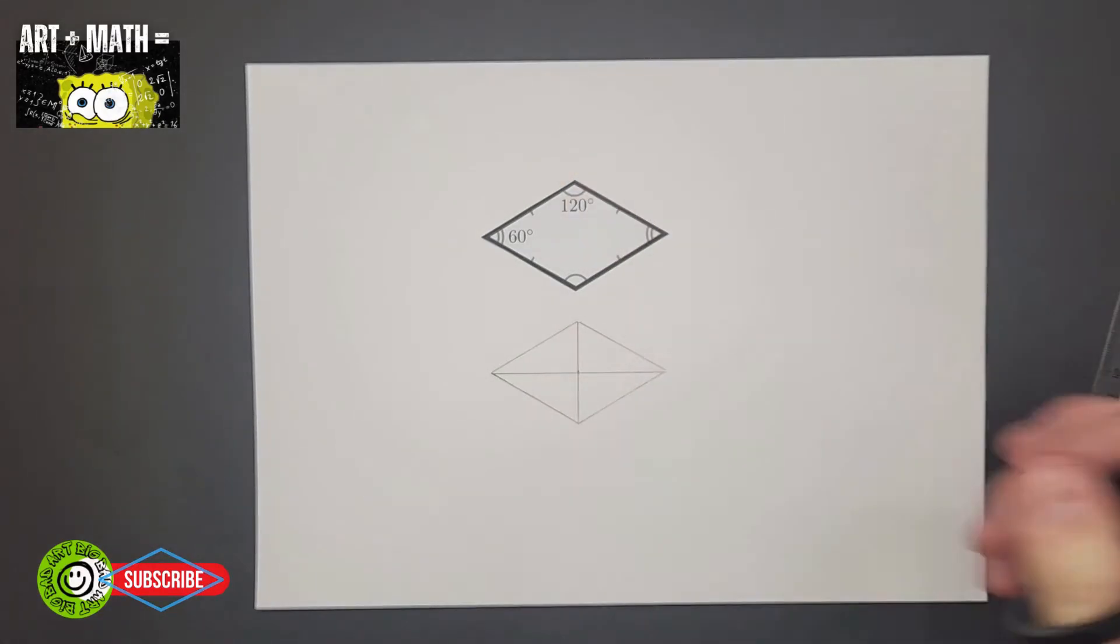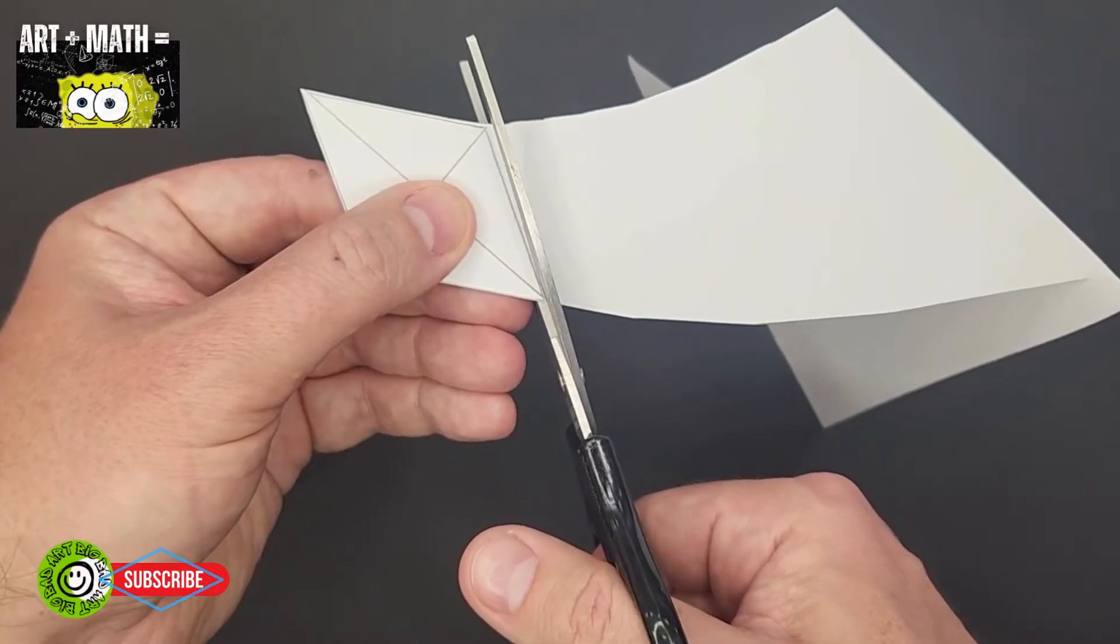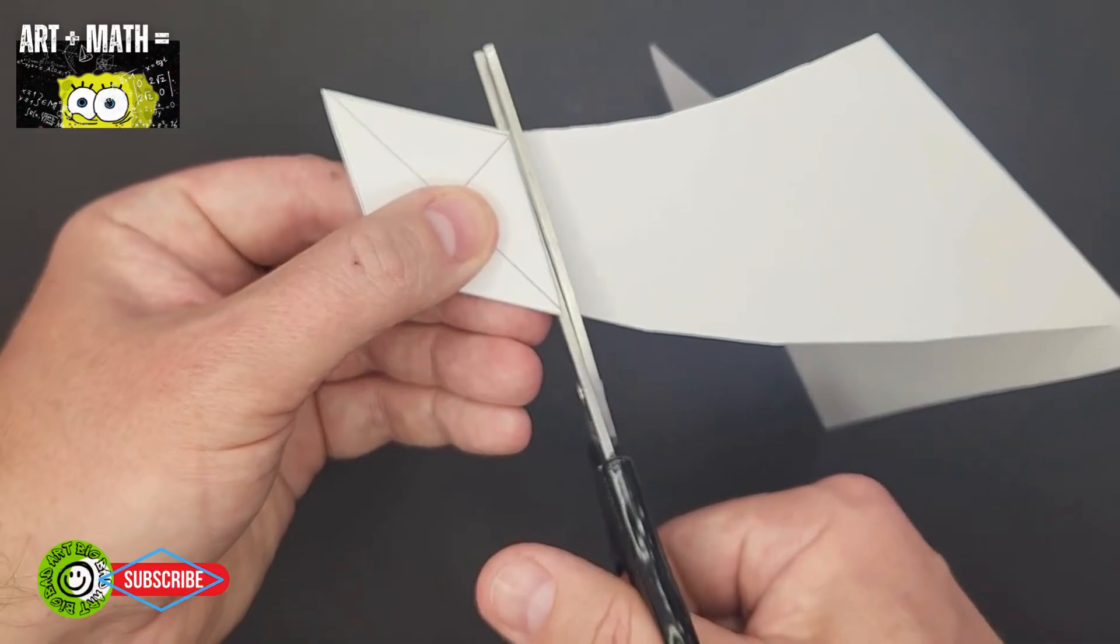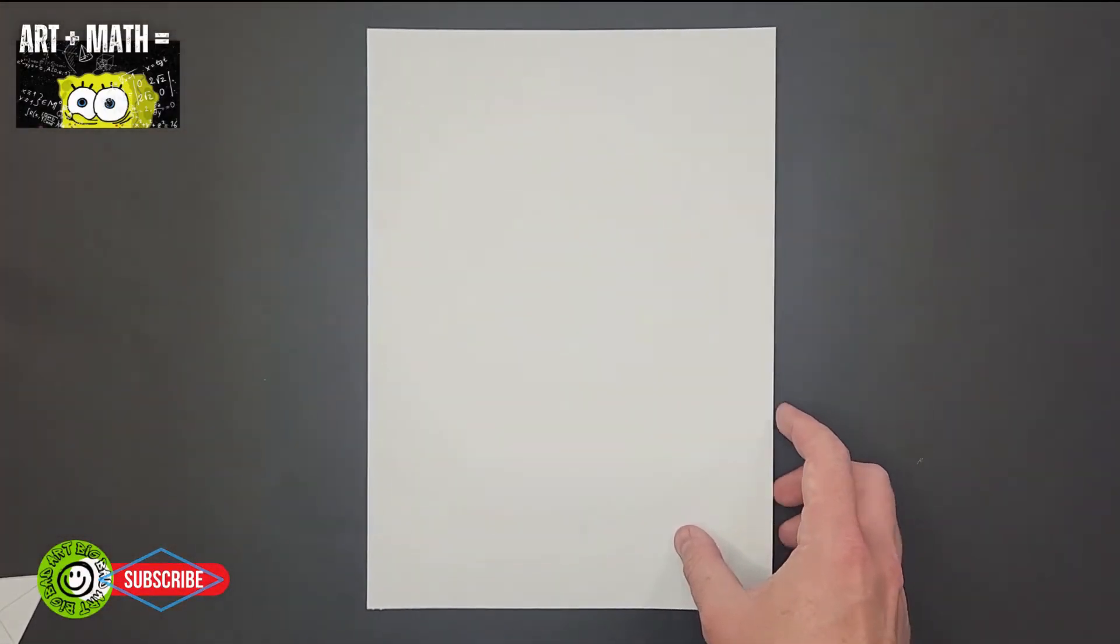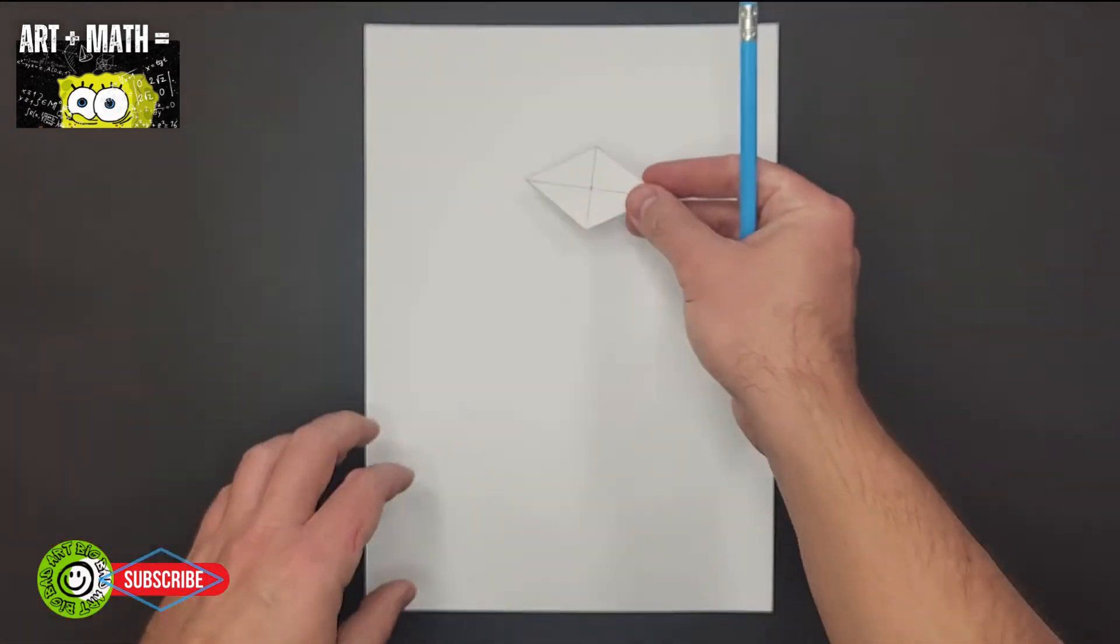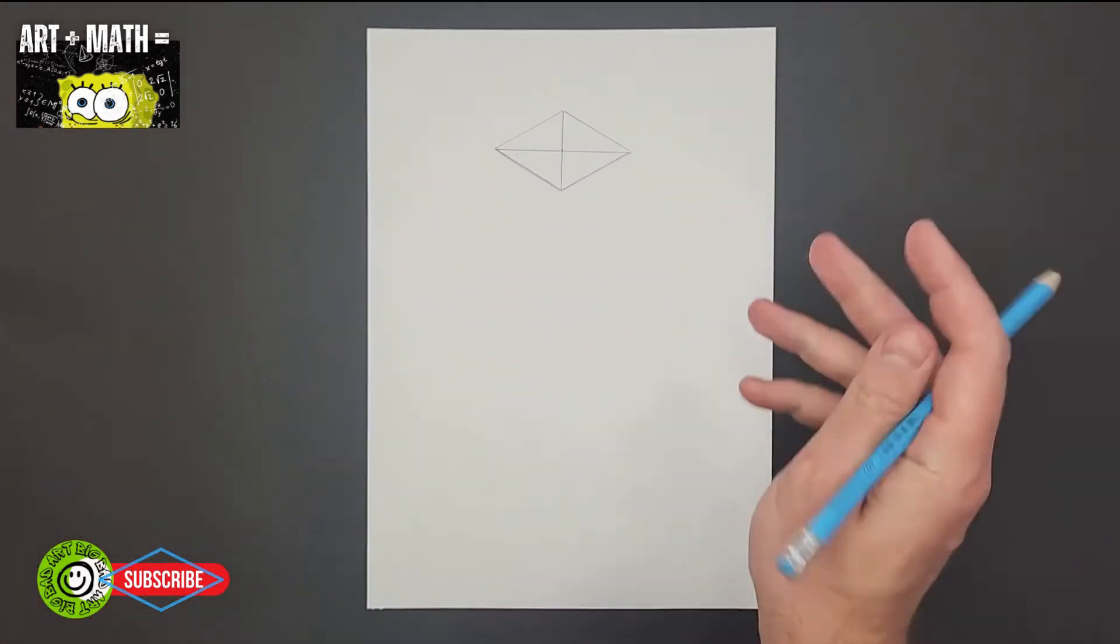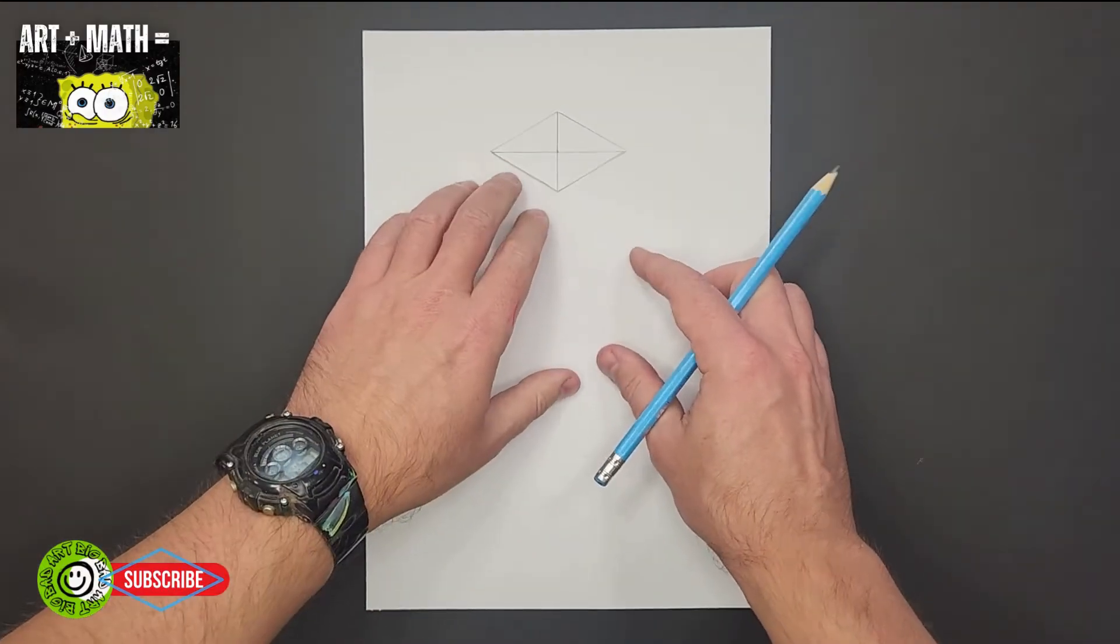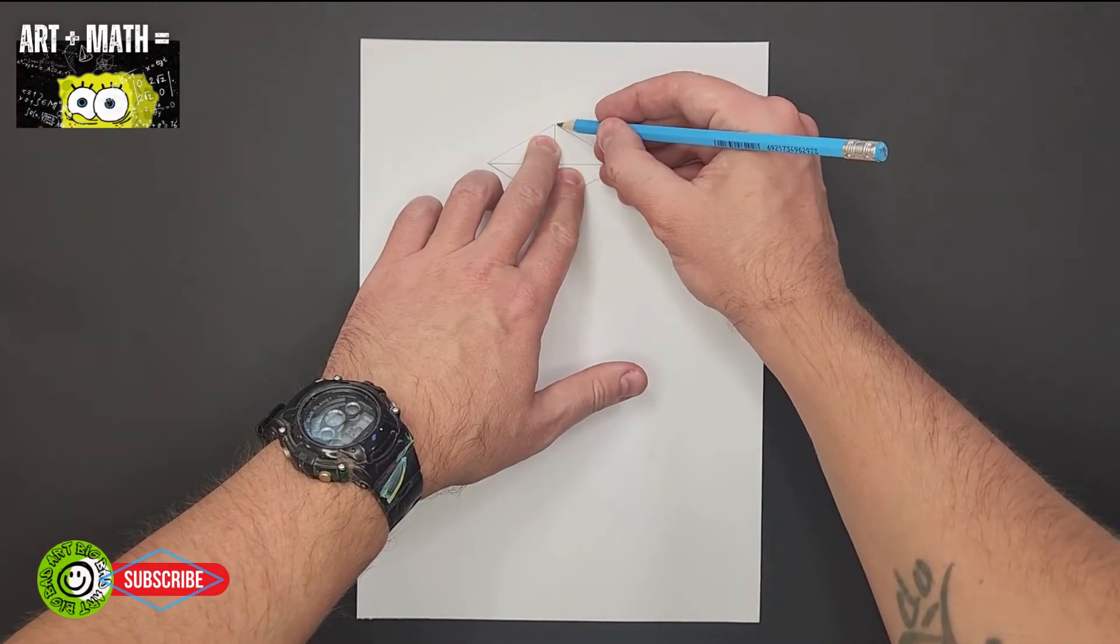Let's cut it out. Okay, now this is where the magic happens. So let's take our rhombus, put it in the middle of your paper towards the top, okay. And then let's draw around it.